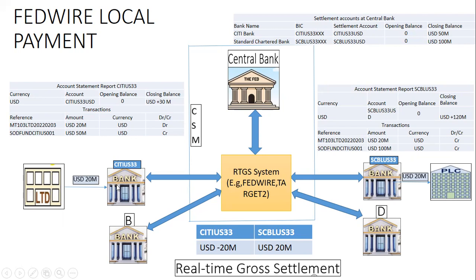When the payment instruction is received — through any banking channel — the bank performs validation and then sends out a payment message in the FedWire proprietary format. This format does not follow any global standard such as SWIFT MT messages or ISO 20022; FedWire has not yet migrated to those standards. I'll show you how this proprietary message looks and how it differs from, say, an MT103.